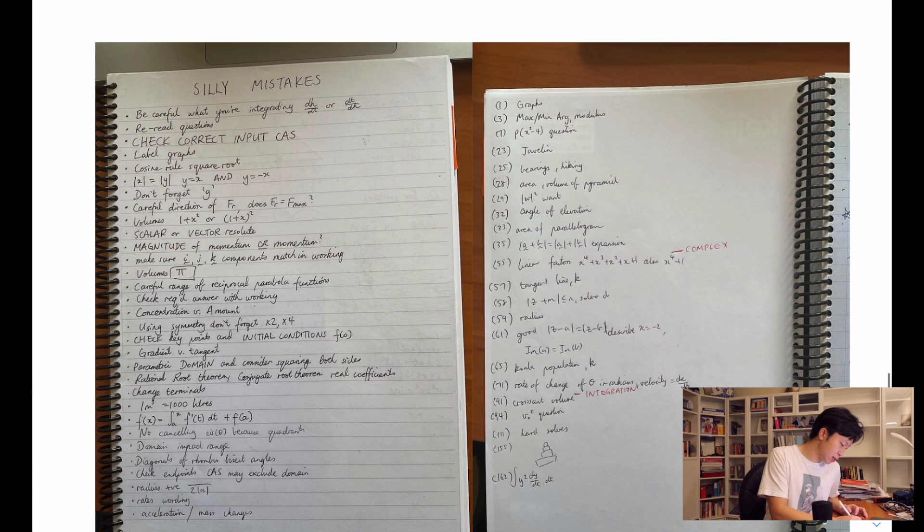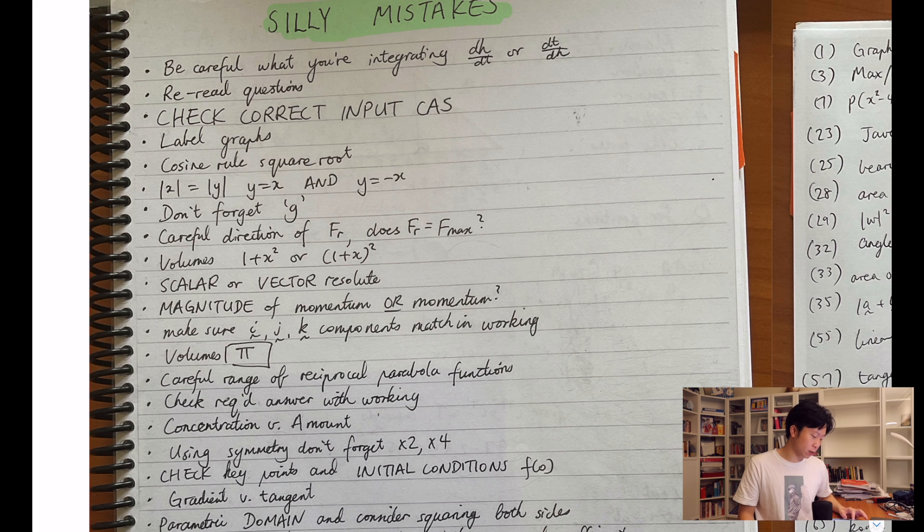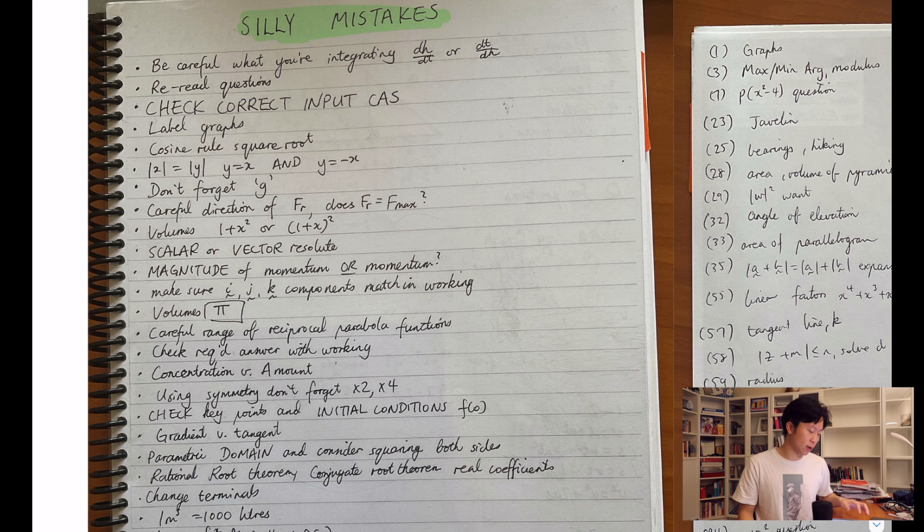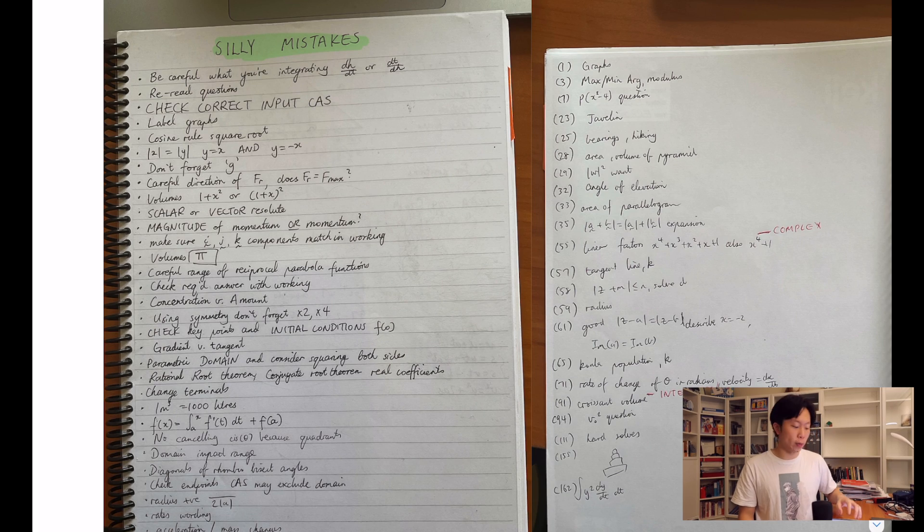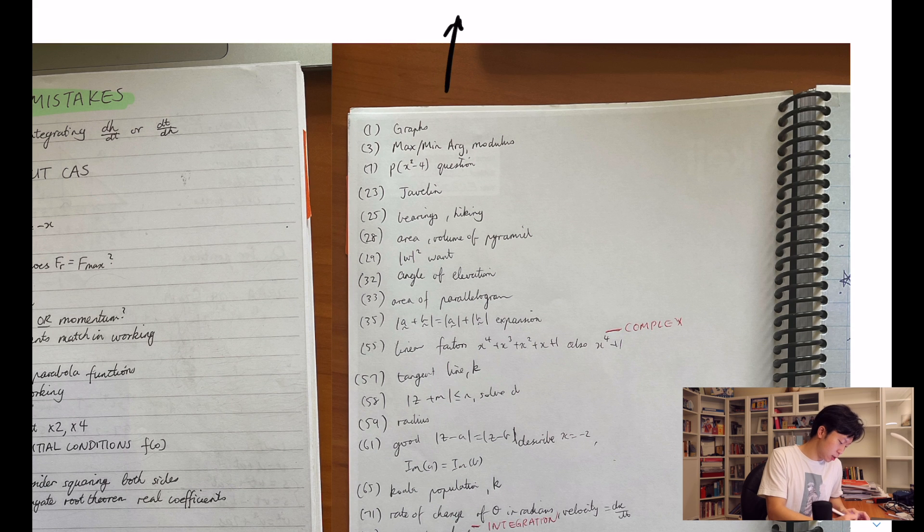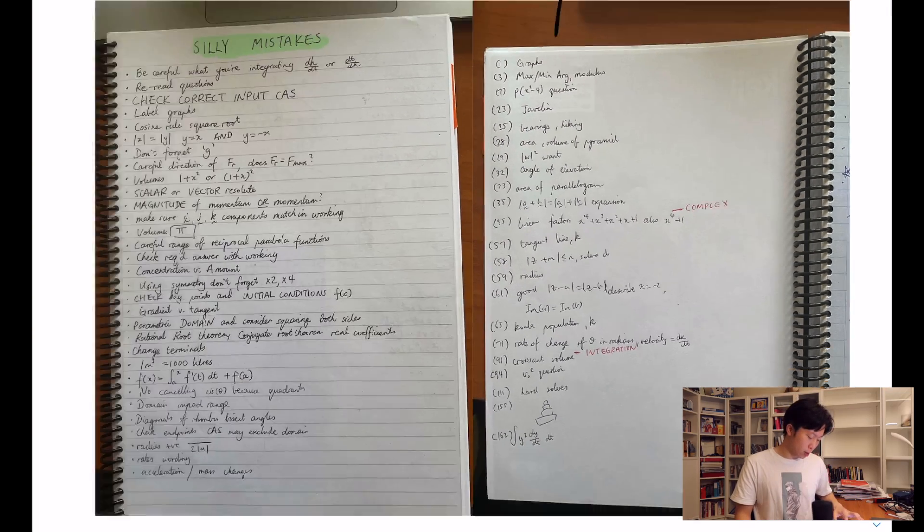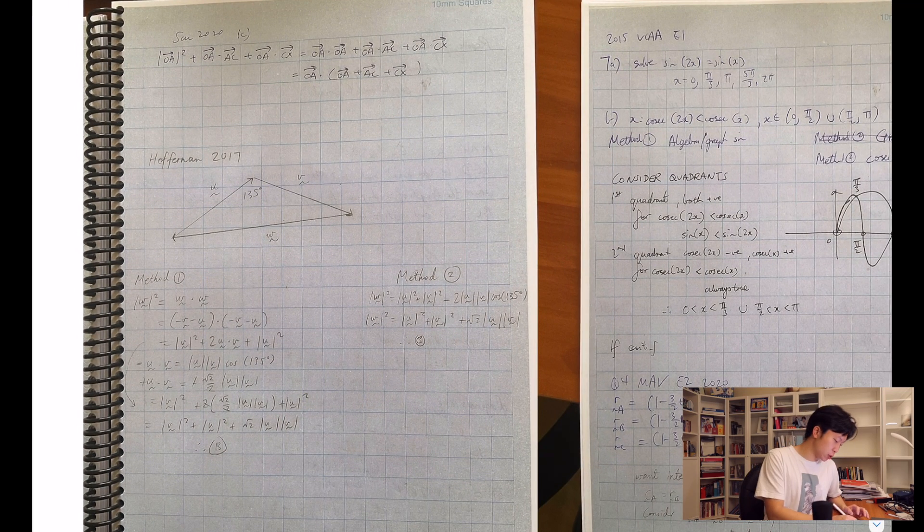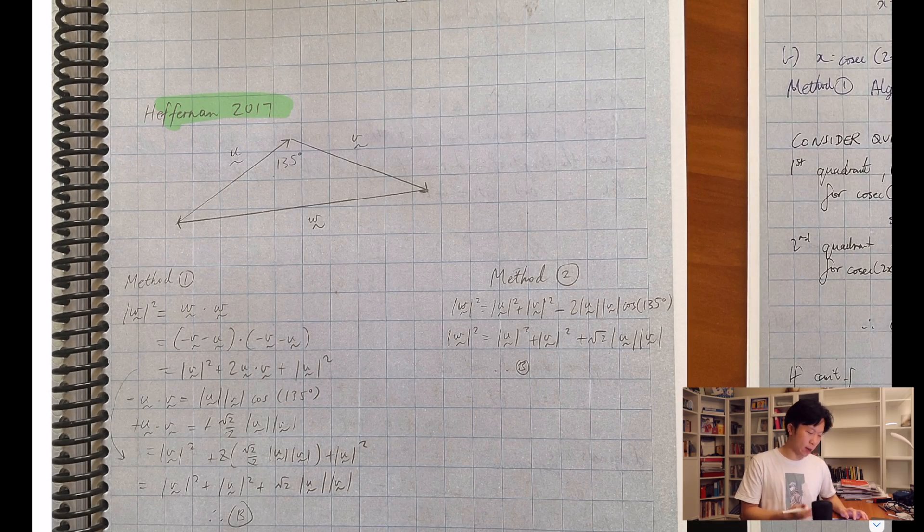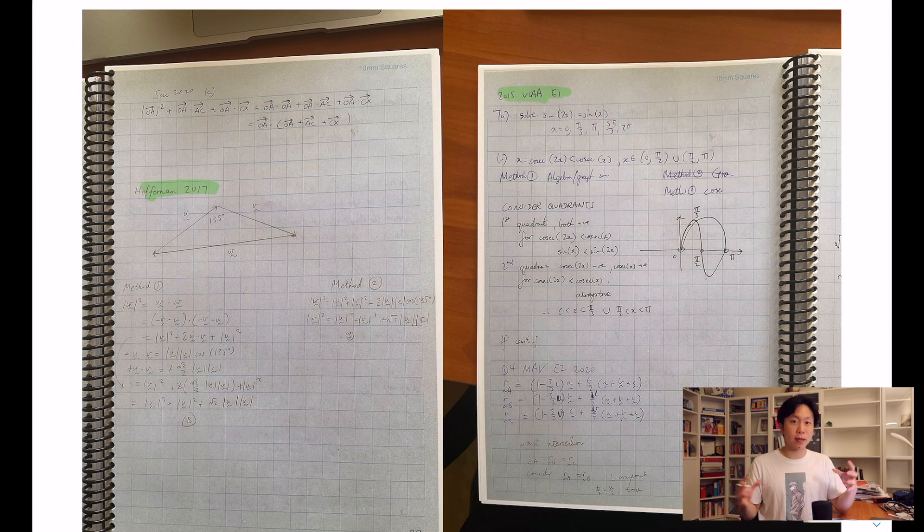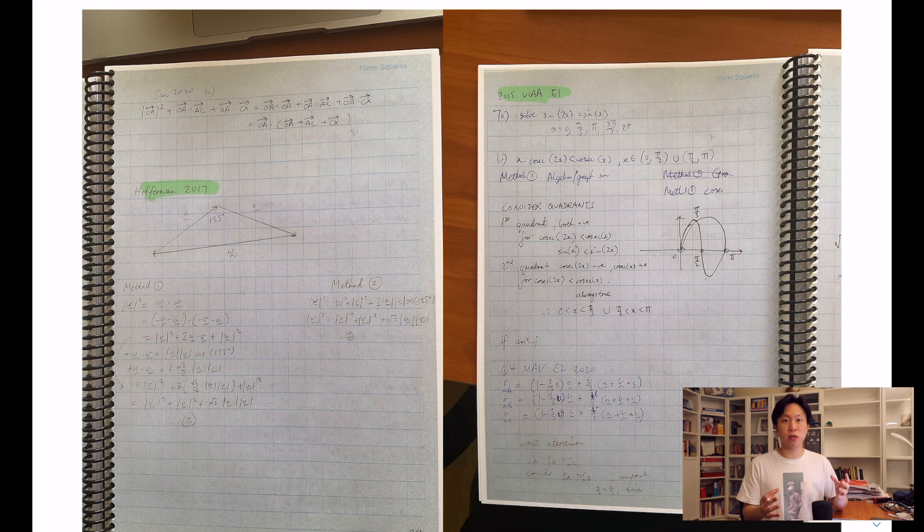That was the main structure of my bound reference. I'll just share with you guys what it looked like. I had my silly mistakes here on the front page as promised - be careful you're integrating, check correct input CAS. That was a big problem for me, I did lose marks in the exam for that as well. Sometimes I just type the wrong stuff into the CAS. Next I had a table of contents, so I labeled my pages so I would be able to find stuff. This is more Spesh orientated. Inside you have difficult questions - here we have Heffernan 2017, a question from there and how to solve it. Here we have the VCAA exam 1 2015 and how to solve it. Get onto your bound reference early on so you can collate these questions and spend your time properly, rather than a last minute haphazard effort to cover all your bases without actually covering anything.